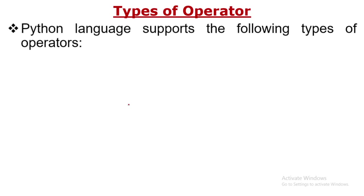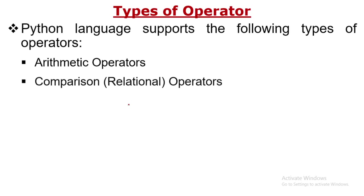Python language supports the following types of operators. First of all, arithmetic operations — in arithmetic operations we know that there is plus (addition), subtraction, division, multiplication, as well as modulus operators, which is also known as the percentage operator.